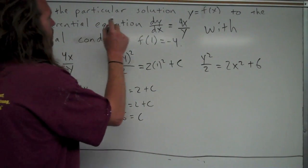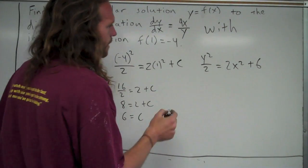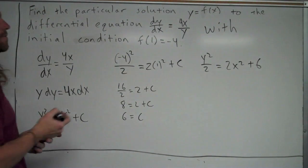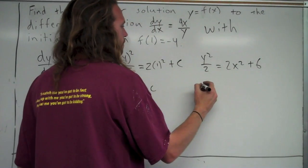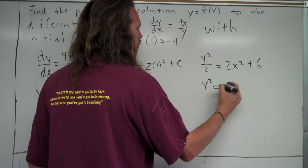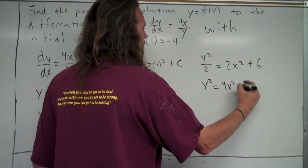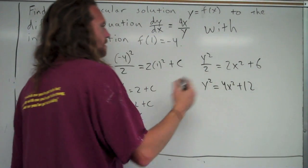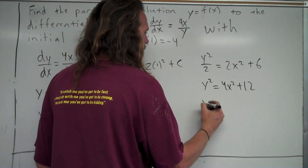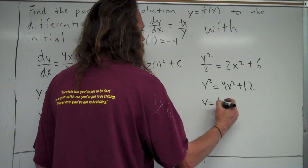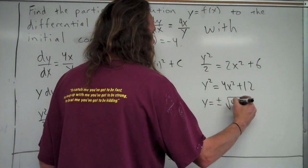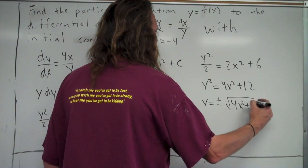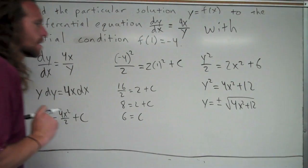Now I need to make sure and find that particular solution, y equals f of x, so I've got to get y by itself. I'm going to multiply both sides by 2 first. y squared equals 4x squared plus 12. I'm going to take the square root of both sides to get y is equal to plus or minus the square root of 4x squared plus 12. Now I've got to think for a second here.